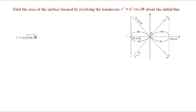Now we need to get the limits of r. When theta equals 0, the lemniscate becomes r squared equals a squared — a quadratic equation with two roots: r equals plus or minus a. When theta equals π/2, the lemniscate becomes r squared equals 0 — a quadratic equation whose root is 0, repeated twice.